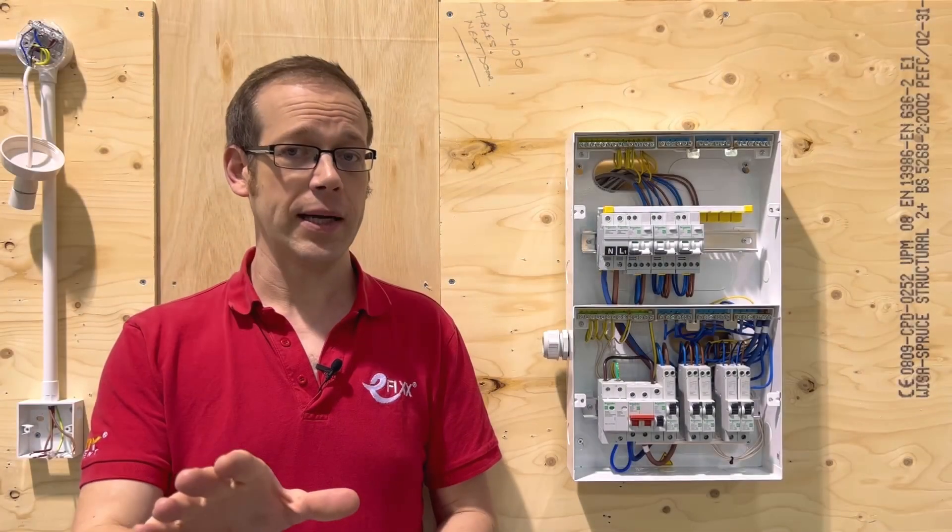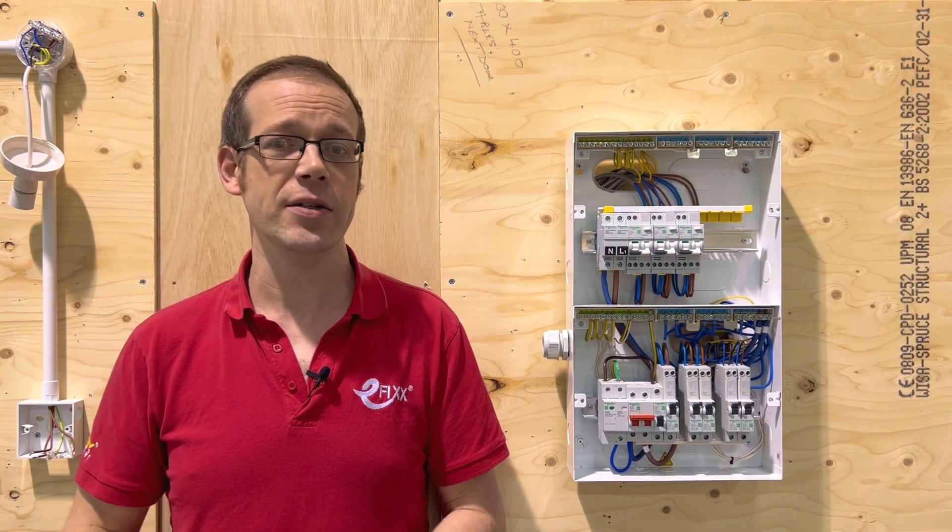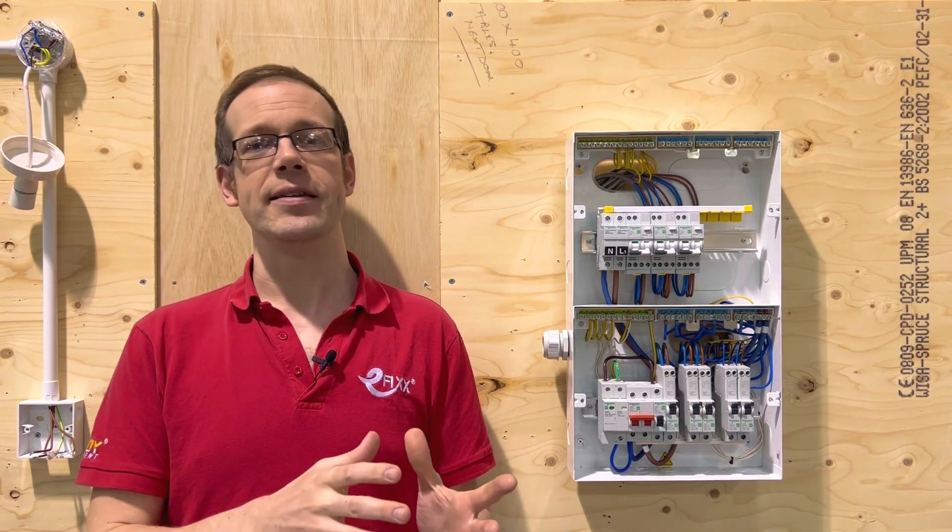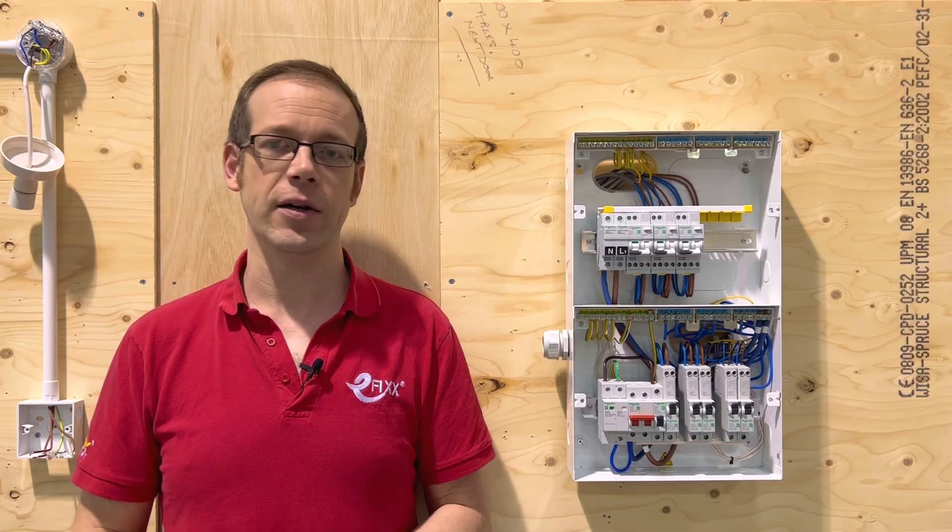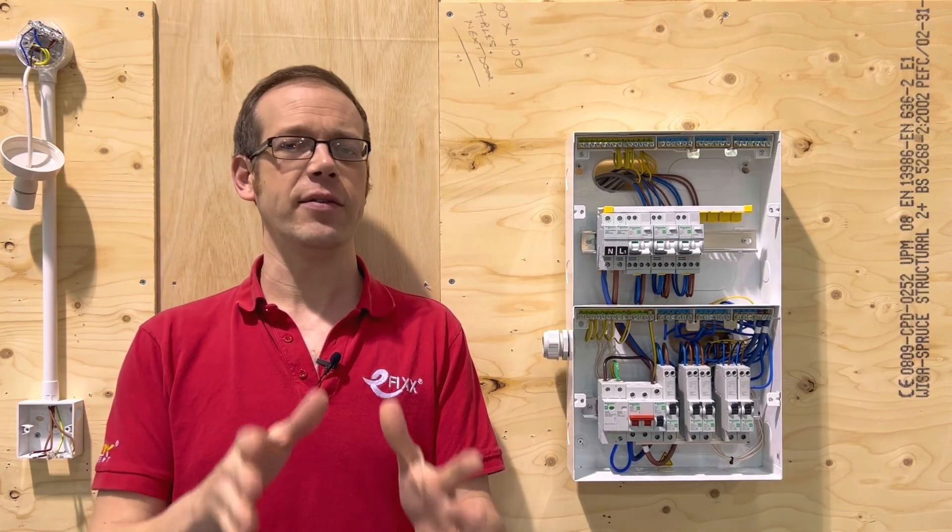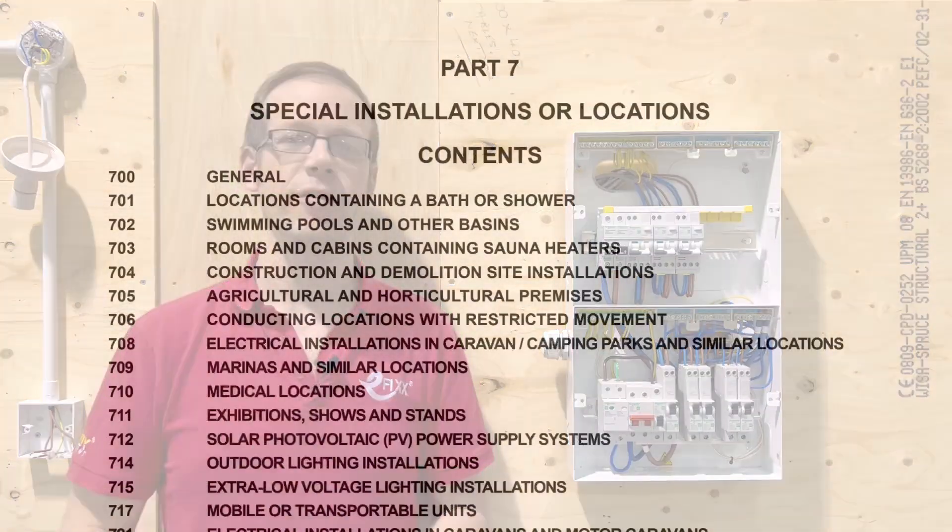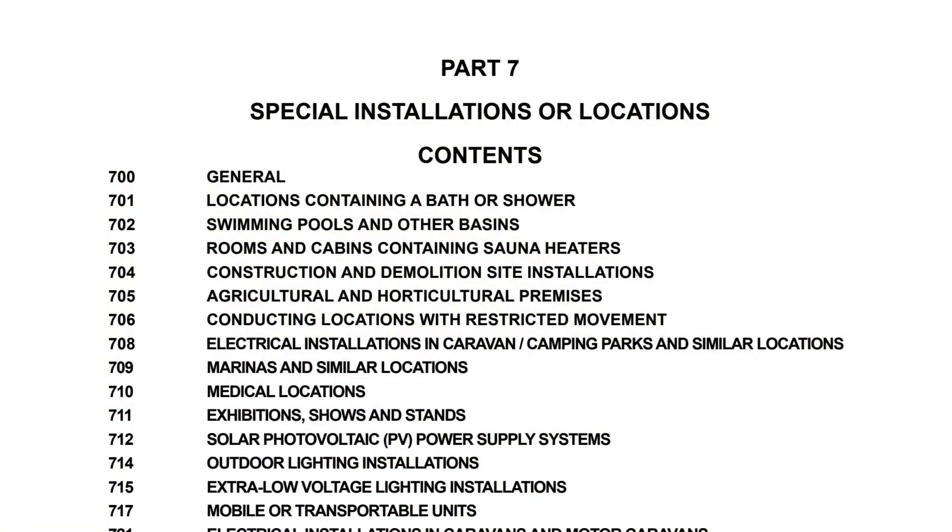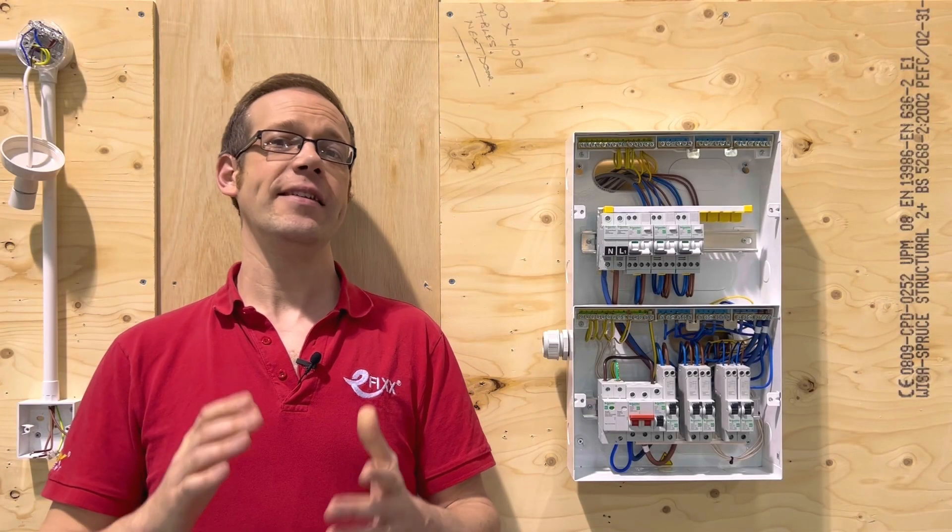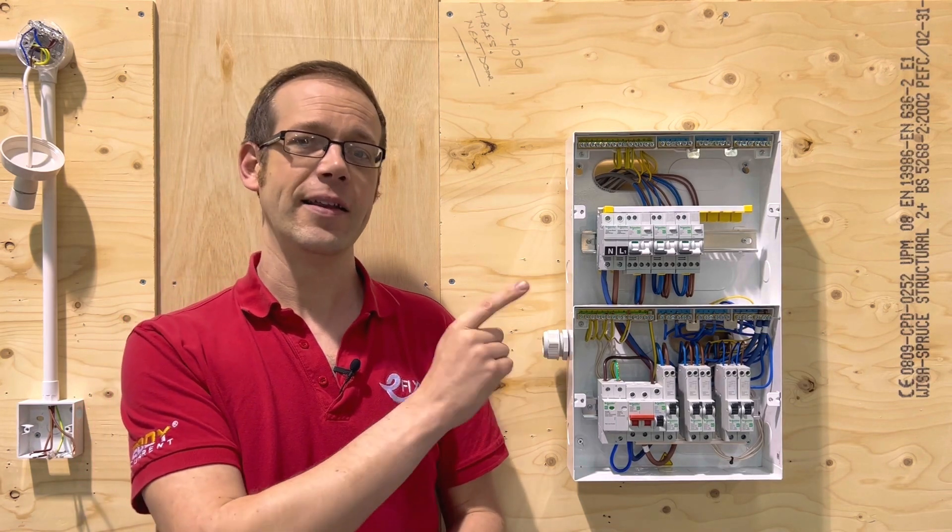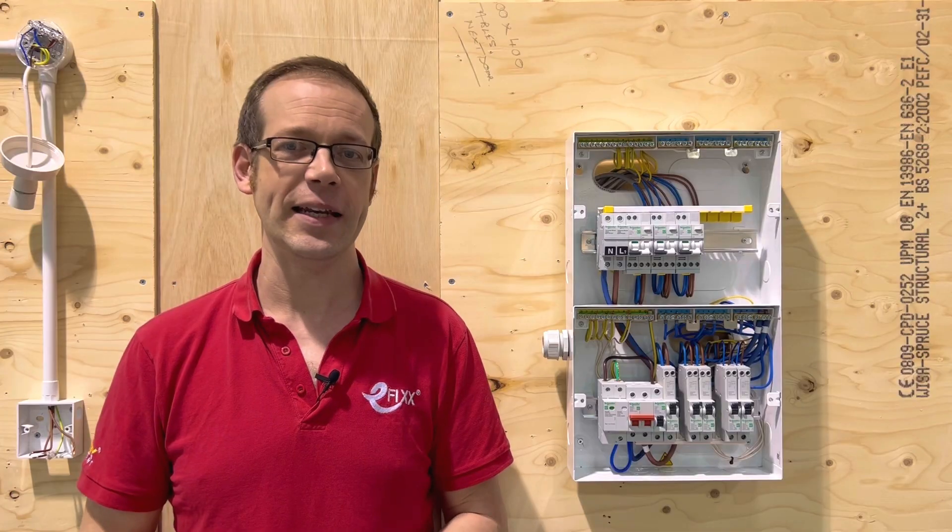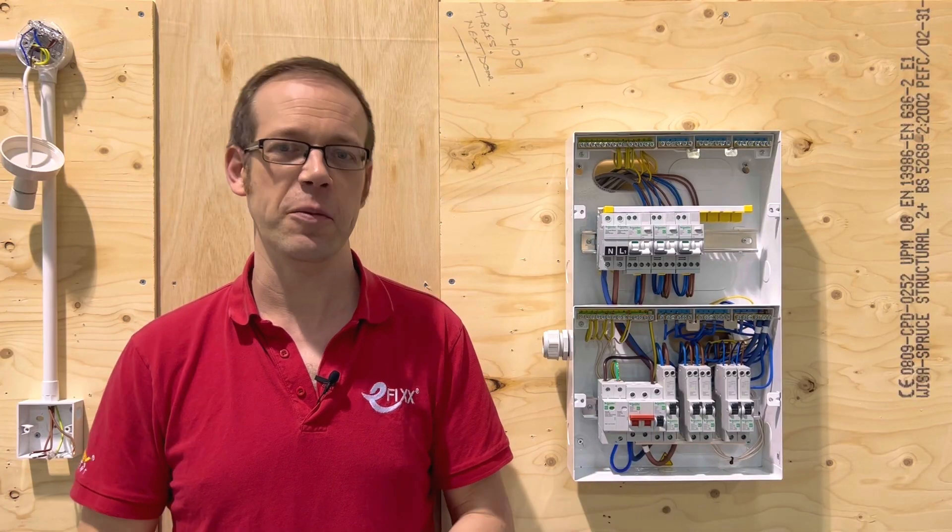There's also part 7 of the regulations which relates to special locations and pretty much every one of these areas mentioned in this list will require some form of RCD protection on various types of circuit but there's far too many to dive into here so if you find yourself working in any one of those environments please make sure that you read the relevant section of BS 7671 section 7 carefully. The next video in this series is on surge protection devices and can be found by clicking the link right here or by clicking the next button below if you're taking part in our free CPD. All that remains to say is thanks very much for watching.